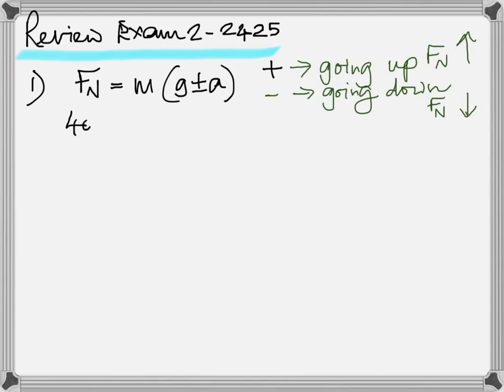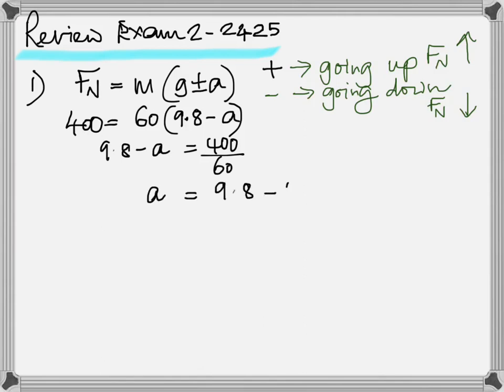His actual weight would be 60 times 9.8, which would be 588 N. Since there's a smaller reading, it should be going down. So it's 60 times 9.8 minus A equals 400. You calculate and get A as 9.8 minus 400 by 60, which is 3.13, close to 3.14. You know that it's downward.